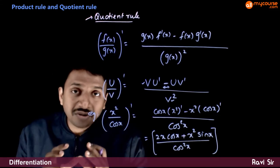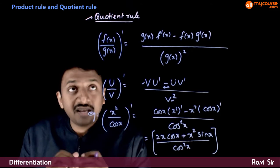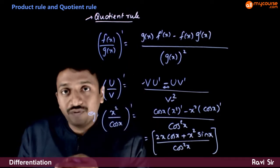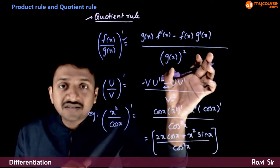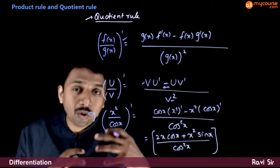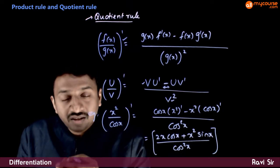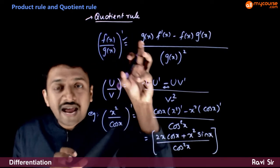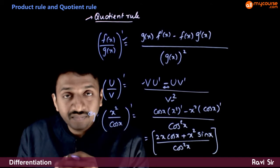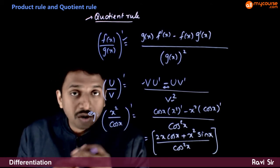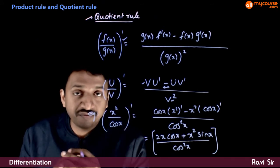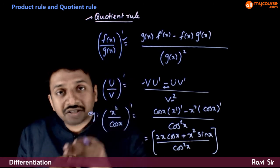You have now understood the first principle of differentiation, and how to find differentiations of products and ratios of two functions. These formulas can also be derived using the first principles — the basic concept is always the first principle. The derivations of the product rule and the quotient rule can be done from first principles, and I encourage you to try that. Next, we will tabulate the standard differentiation formulas, so that once we have them, we can differentiate all functions very easily.